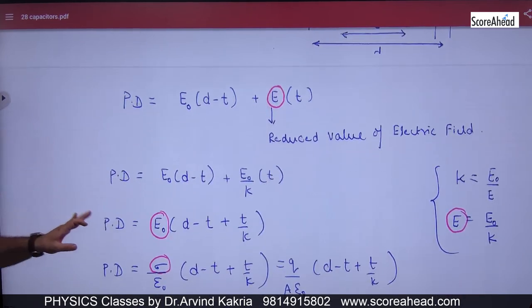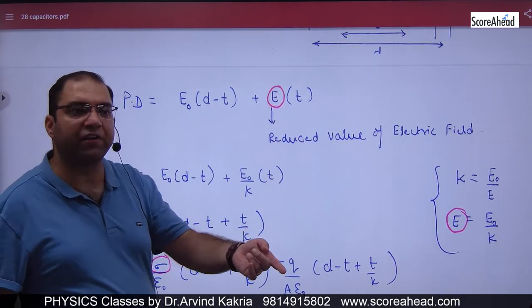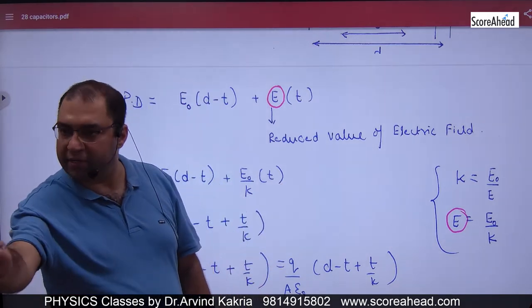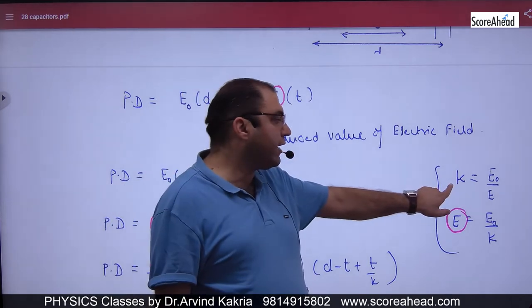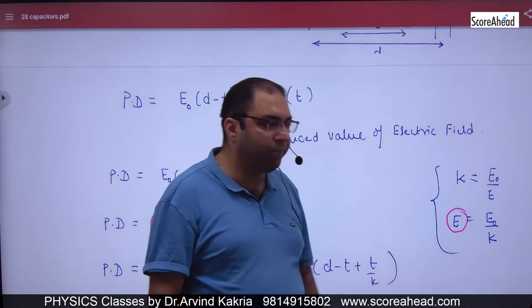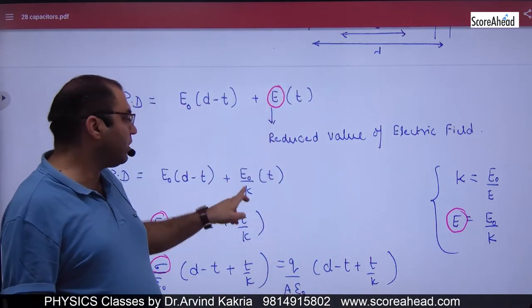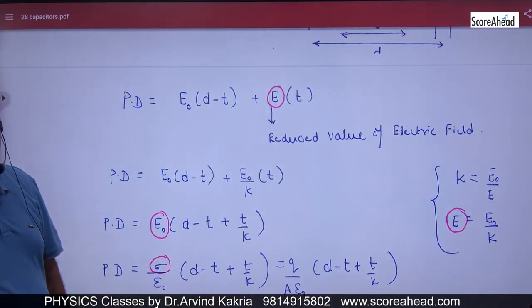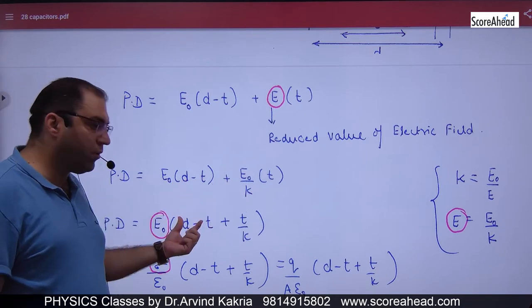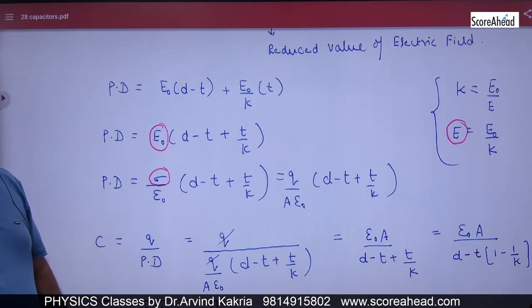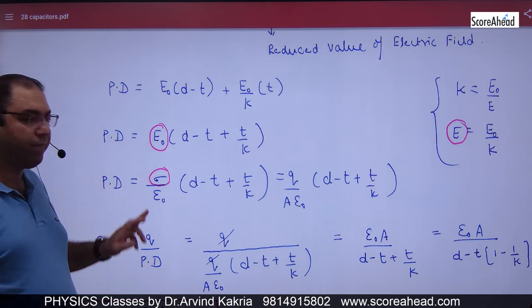This is E, the dielectric field inside, which is the reduced value of electric field. The dielectric constant K equals E0 upon E. Cross multiply: E equals E0 by K. E0 is common here. What is the potential difference? And what was E0 in the capacitor plates? Sigma by Epsilon0.